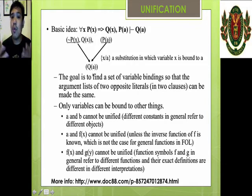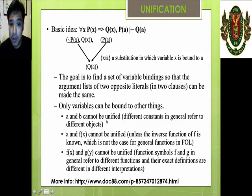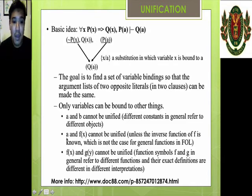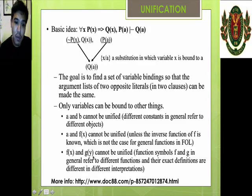Just note these rules: only variables can be bound to other things. If it's already a Skolem constant, you cannot bind it with other constants — A and B cannot be unified; different constants refer to different objects and cannot be unified. Maria and Luis cannot be unified. How about A and f(X)? The function f(X) cannot be substituted by constant A — a function cannot be substituted by a constant. But the variable inside the function, X, can be substituted by A, giving f(A). Functions cannot be substituted by other functions: f(X) cannot be substituted by g(Y). Only variables can be substituted by constants or functions.